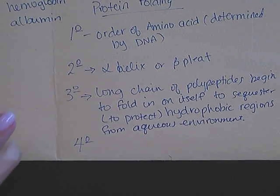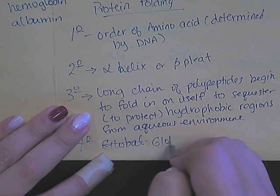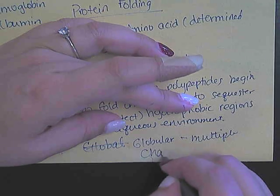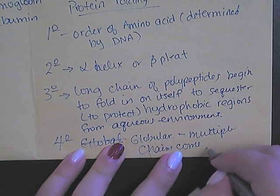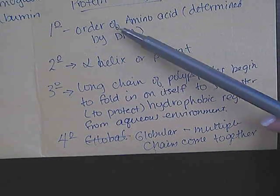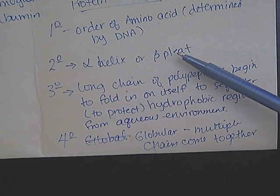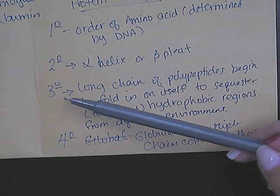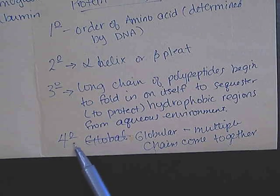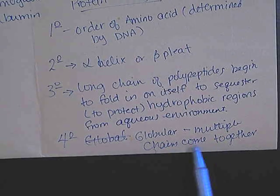The fourth and final level of protein folding is what we call quaternary, or globular, where multiple chains come together to form your functional protein. To summarize: the primary level is the specific amino acid sequence determined by DNA; the secondary level is an alpha helix or beta pleat; the tertiary level minimizes hydrophobic regions from interacting with the environment; and the quaternary level is globular, where multiple chains come together to form the functional protein.